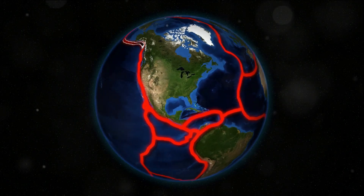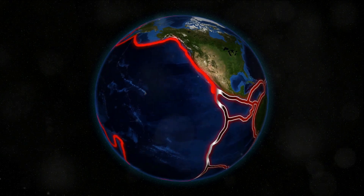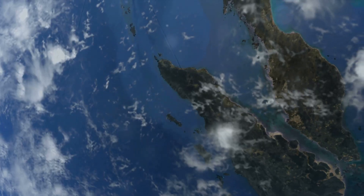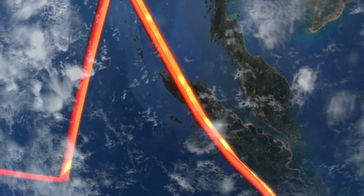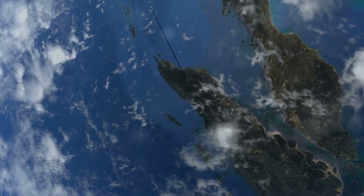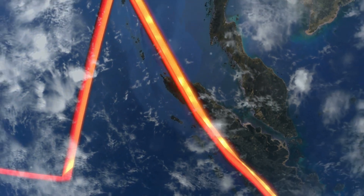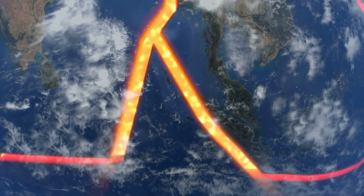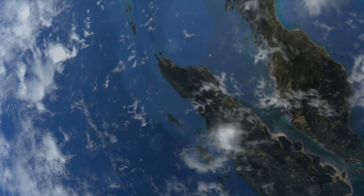Our Earth's outer shell, the lithosphere, is not one solid piece. Instead, it's divided into several large rigid pieces known as tectonic plates. Imagine these plates as giant puzzle pieces floating on the molten rock beneath, moving, albeit very slowly.